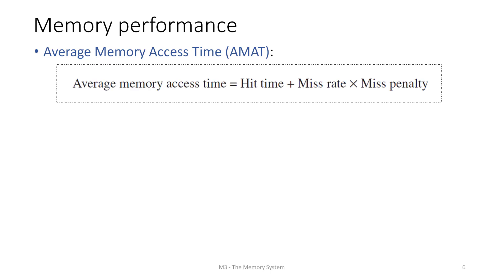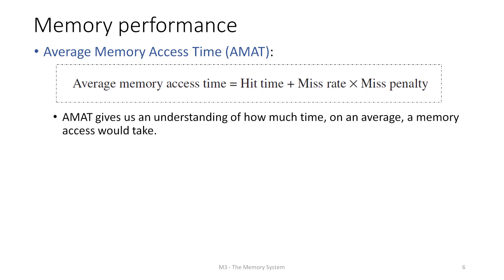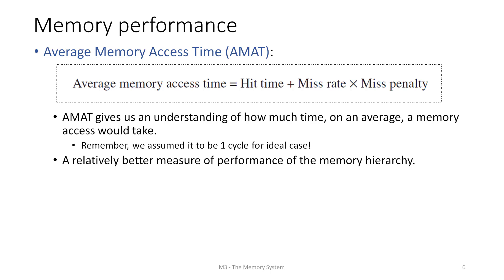AMAT is defined as hit time plus miss rate times miss penalty. It gives us the number of cycles spent per access to that level of memory. In the ideal case with no misses, miss rate equals zero and hit time equals one cycle. AMAT is a more holistic performance metric than looking at hit time or miss rate independently.